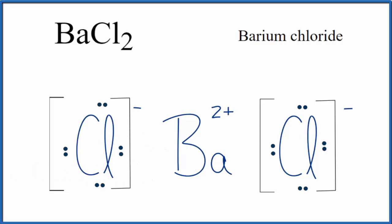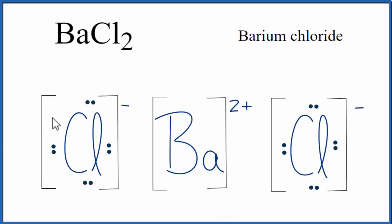Sometimes you'll also see brackets around the positive ion. And that's the Lewis structure for BaCl2, barium chloride.